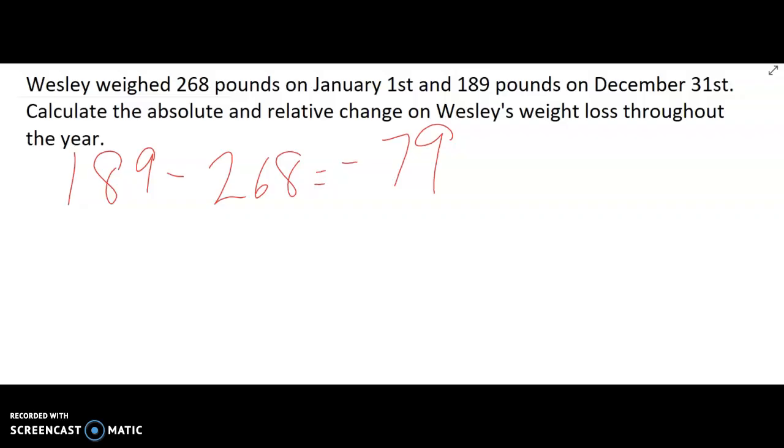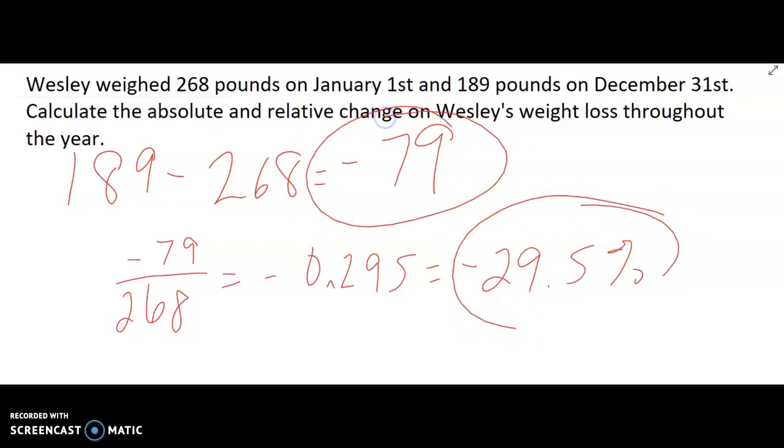Now let's find the relative change. Again, we take the absolute change and we divide by the initial or the old, which is 268. When I get that, I get negative 0.295, which is roughly negative 29.5%. So Wesley lost 29.5% of his weight in that year. That's what that means. There was a decrease of 29.5% of his body weight.